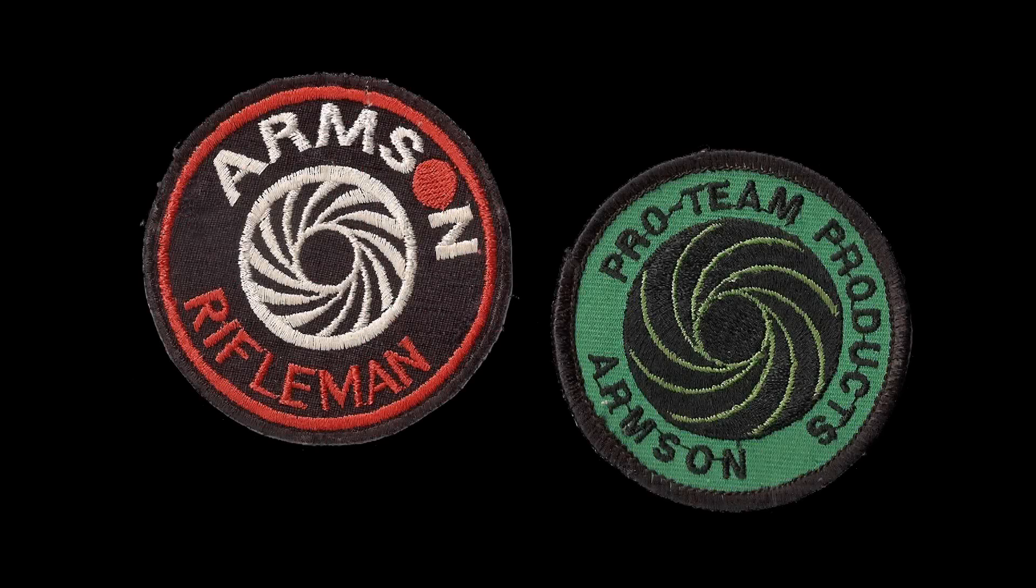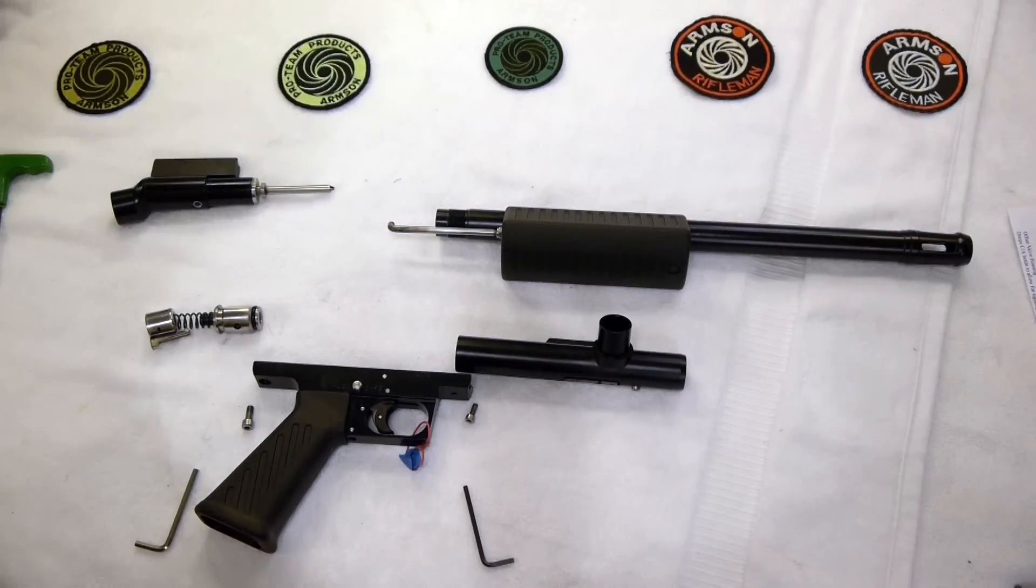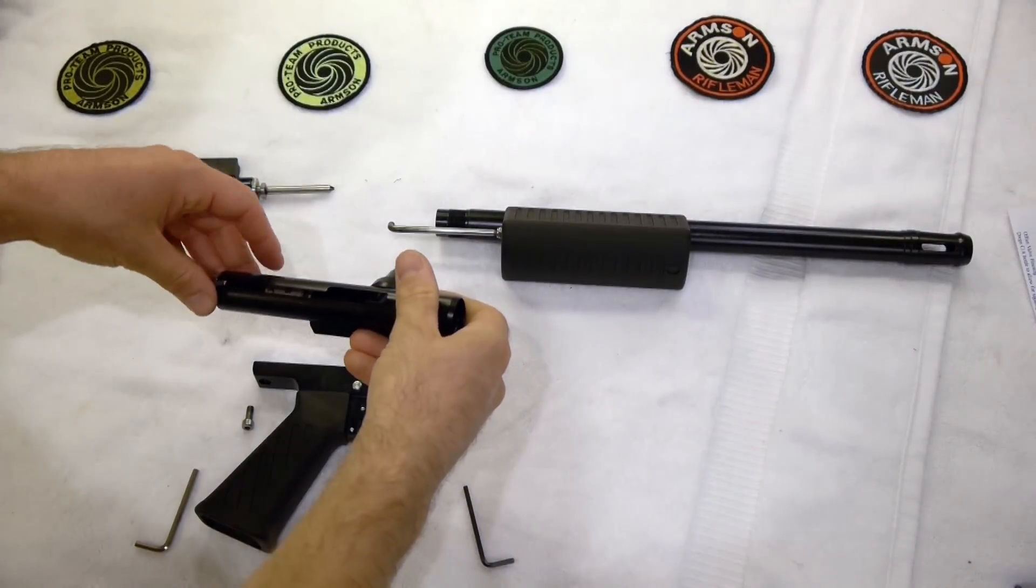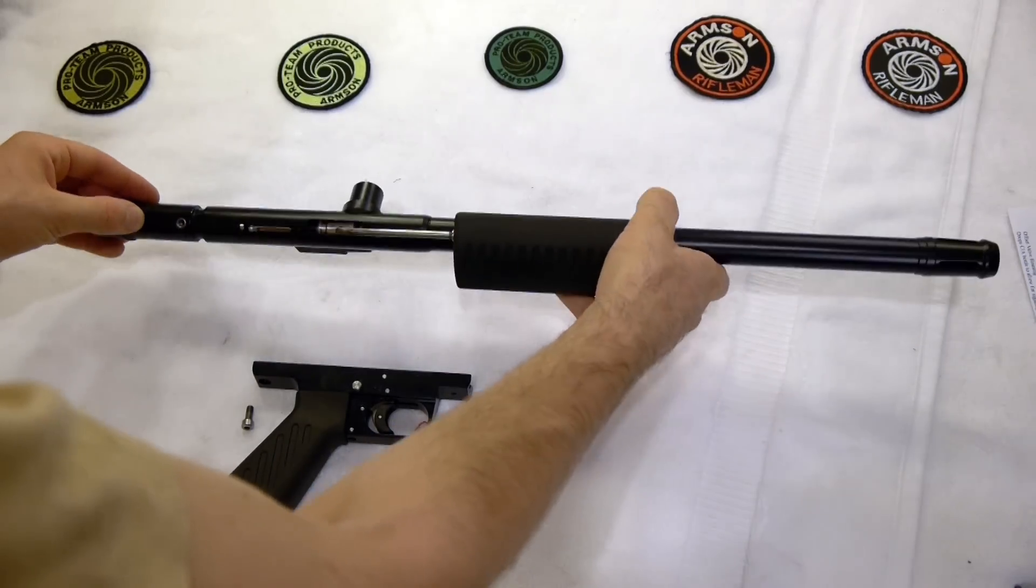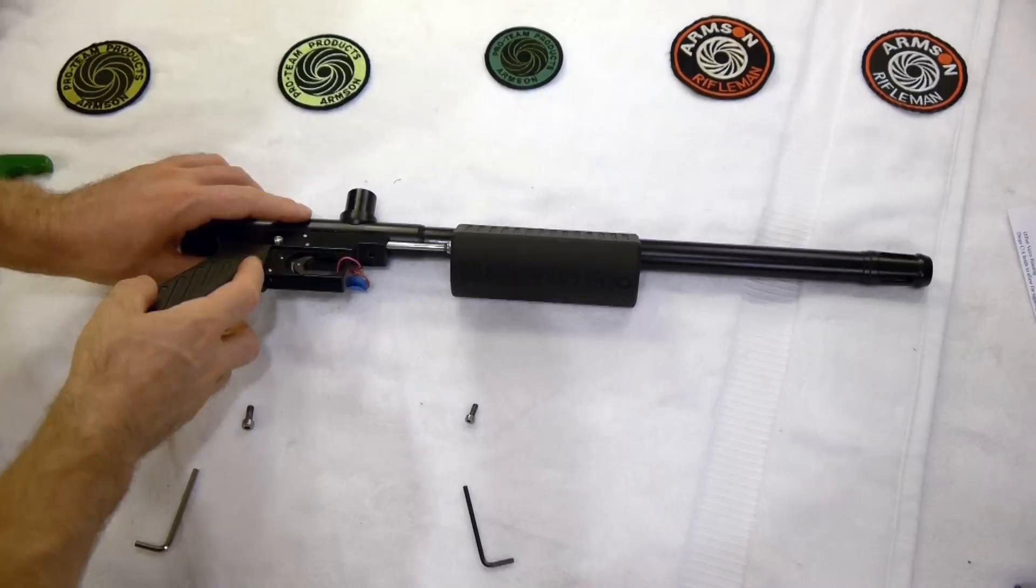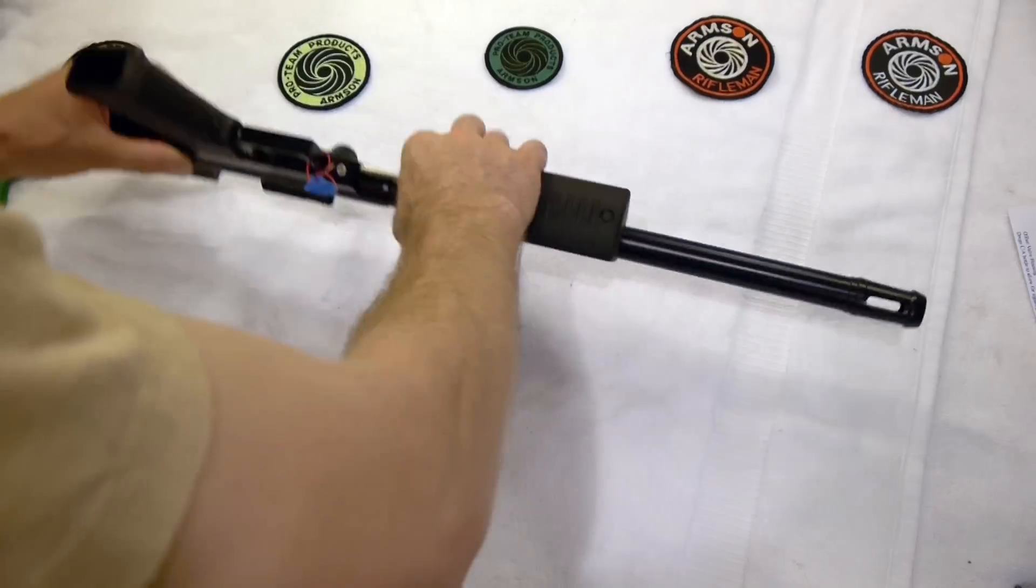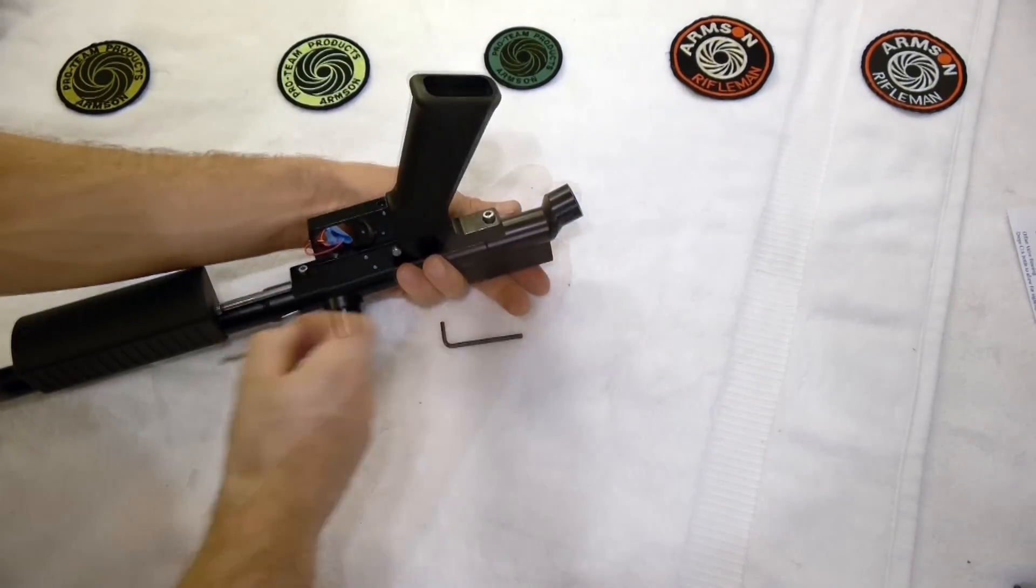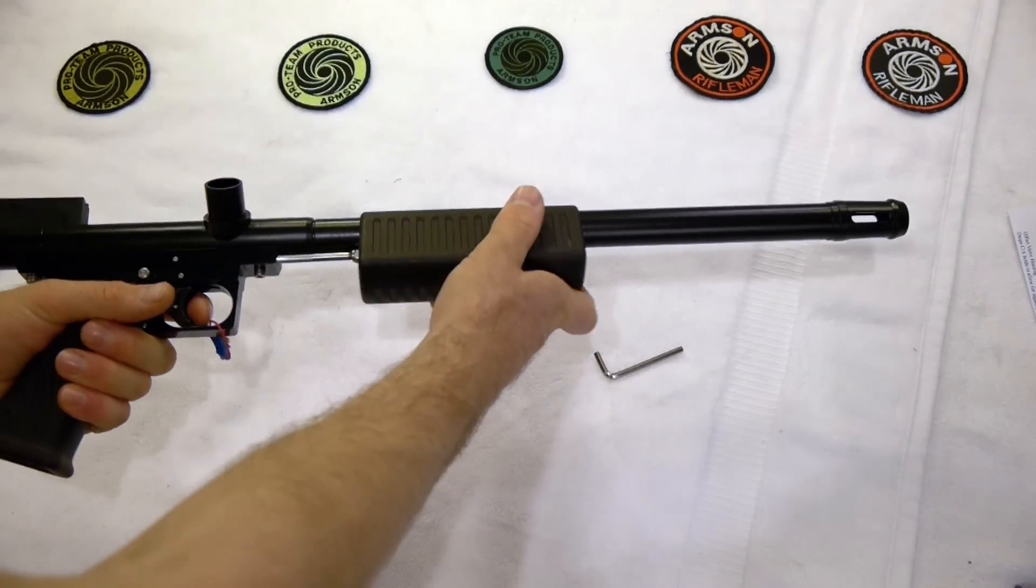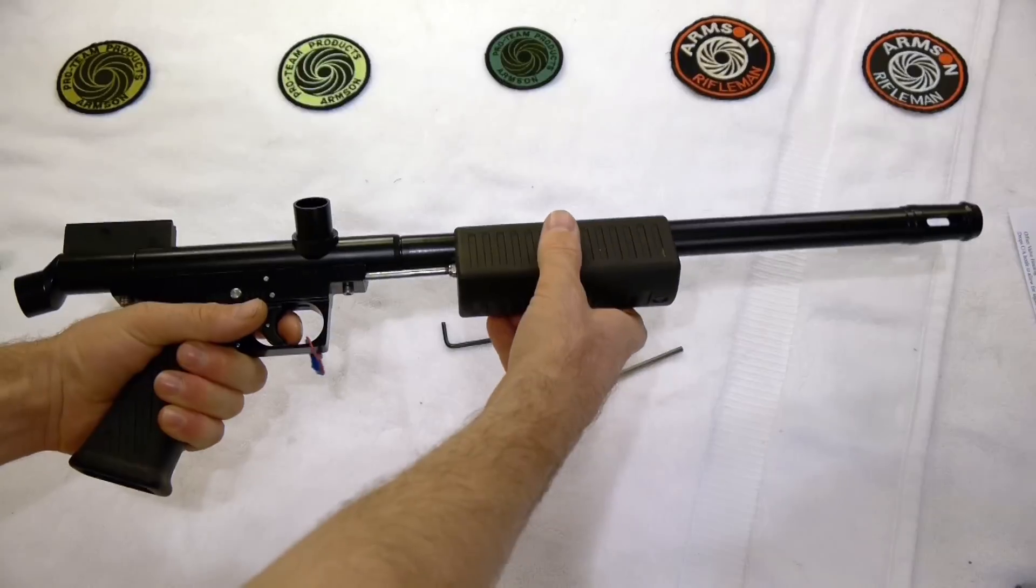And now we're going to do a speed reassembly of the Ariakon Assassin: dropping the internals in, connecting the pump rod into the bolt, threading in the barrel, inserting the power tube assembly, placing the grip frame, lining up to the front, threading in the front grip frame screw, threading in the back grip frame screw. And now we're ready to hit the field with our Ariakon Assassin.